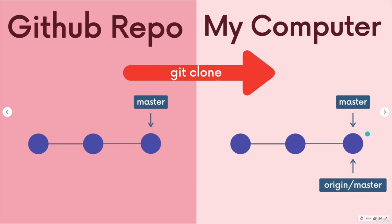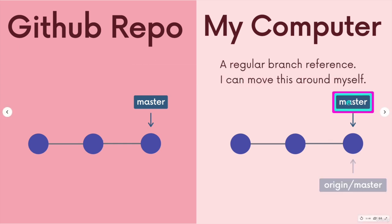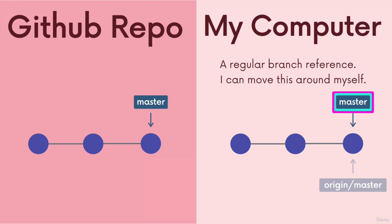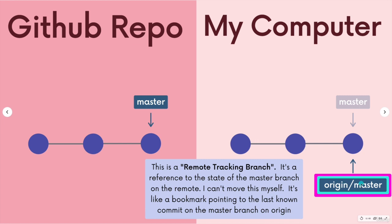There are actually two branch references here, and we've only talked about one. There is the standard master branch reference, a regular old branch reference. This uses master, but whatever the default branch is when we clone, that's what we end up with. We have our regular branch reference, and that acts like any other branch reference — if we add new commits, it will move. But then there's this other thing: origin slash master. This is something called a remote tracking branch reference. It's just a pointer, but this pointer does not move by itself — it's pointing back to the last known commit on the master branch from the origin remote.